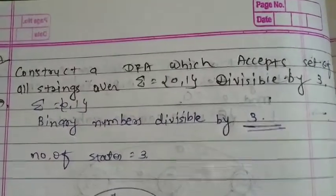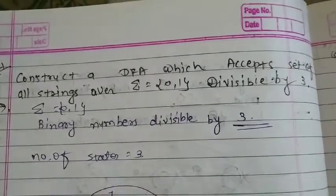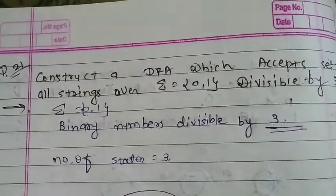Binary numbers divisible by 3, like our numbers are 0, then 6, 9, 12, 15, 18, 21, etc. and many more.